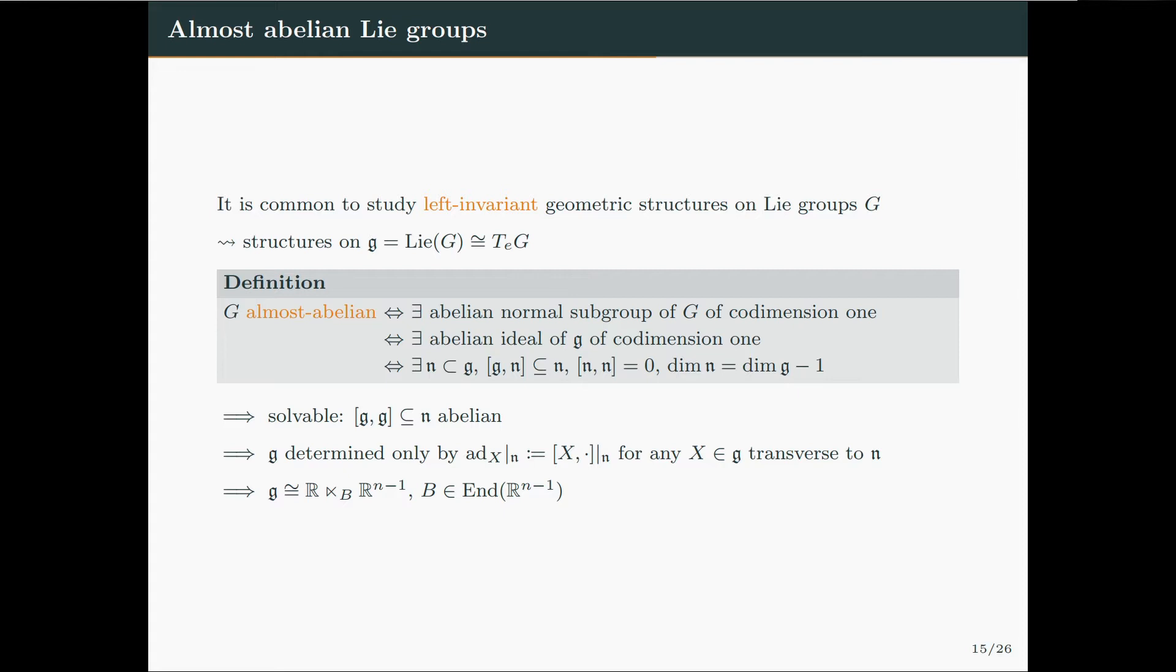We notice that being almost abelian implies being solvable, since the commutator ideal is contained in N, so it is in particular abelian and so nilpotent. One fact that makes almost abelian Lie groups easier to study is that the whole Lie algebra structure is determined by the adjoint action of just a single vector. One can pick any vector which is transverse to the abelian ideal. And this implies that the Lie algebra G is isomorphic to the semi-direct product of R and R to the n minus 1, where we are assuming n to be the dimension of G, and in this case B is an endomorphism of R^(n-1).